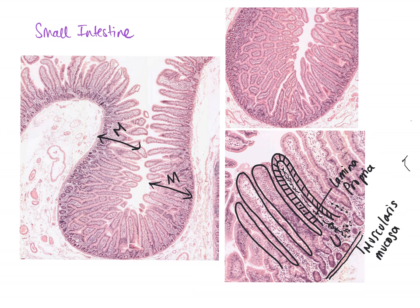To recap: the lamina propria and the muscularis mucosa are present throughout the entire gastrointestinal tract. The lamina propria — that loose connective tissue underneath the epithelial cells — is always present, as is the muscularis mucosa layer, which moves the intestinal glands or villi.